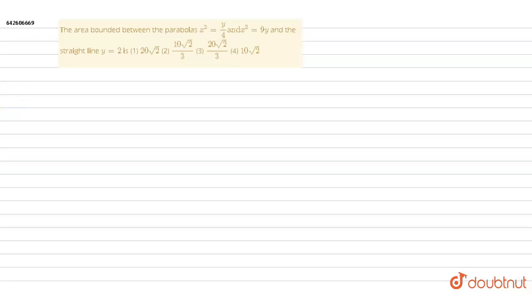Hi everyone, the question is: the area bounded by the parabolas x square is equal to y by 4 and x square is equal to 9y and the straight line y is equal to 2.